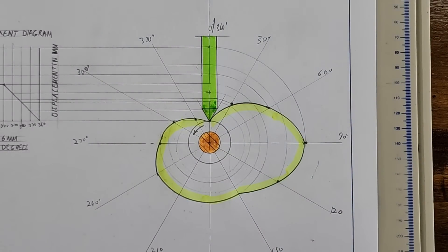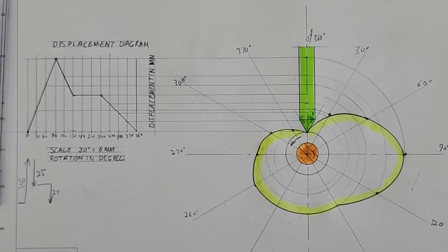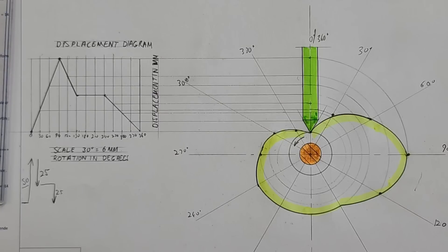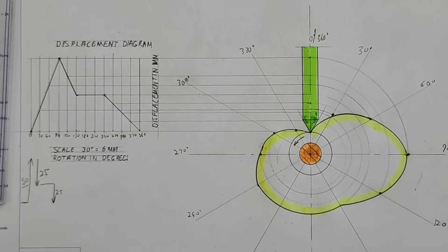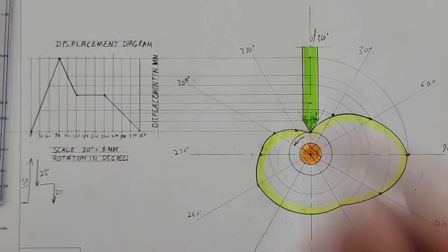Alright, that's it. The overview of a loci of a cam with displacement diagram. Thank you for watching, now it's yours.